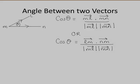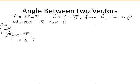Here's an example: vector A is 3i plus j, and vector B is i plus 2j. The question asks you to find the angle between vectors A and B. From our definition, the cosine of the angle between two vectors equals the dot product of A with B over the modulus of A times the modulus of B. A good idea is to find the dot product and the moduli separately, then substitute back into the formula.